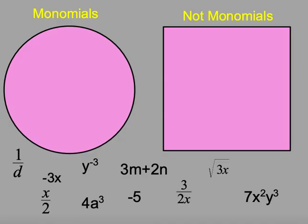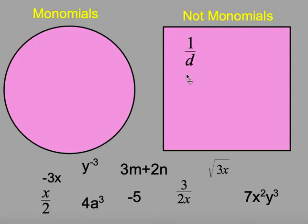On the next screen I have a bunch of different expressions, and we want to classify them and talk about why they are or are not a monomial. Our very first one, one over d — because we are dividing by the variable, that is not a monomial. You cannot divide by the variable. You can divide a variable by a number, but not divide by a variable.